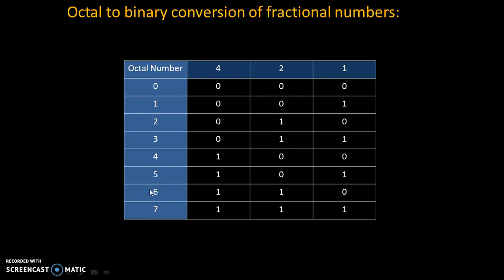Let's take example of 6. 6 is the addition of 4 and 2, that's why the code is 110. Whichever number is needed, we will write that number as 1. So 4 is needed and 2 is needed, that's why code is 11, and 1 is not needed, that's why code is 0.